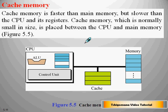Cache memory is faster than main memory but slower than the CPU and its registers. Cache memory, which is normally small in size, is placed between the CPU and the main memory.